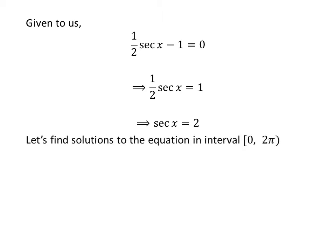Let us first find the solutions to the equation secant of x is equal to 2 in the interval 0 to 2π, as the secant function is a periodic function with period 2π. We know the value of secant of π/3 is 2.